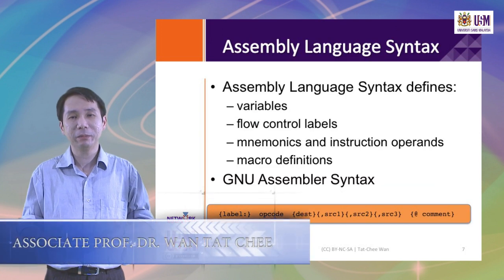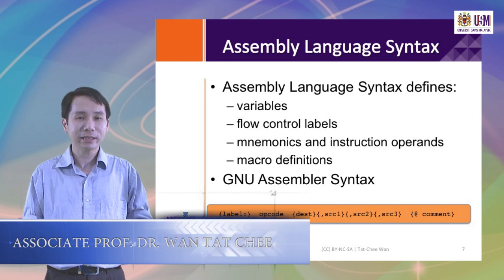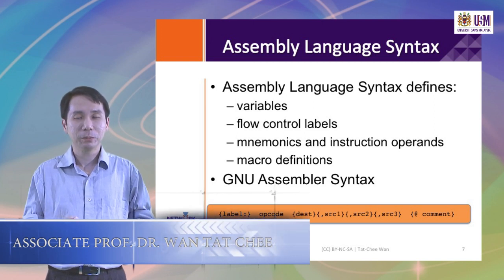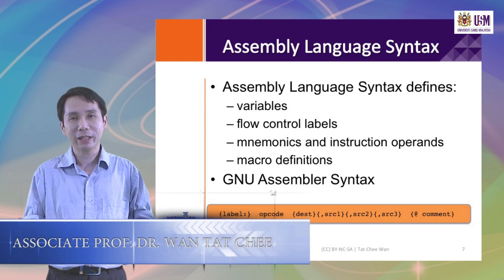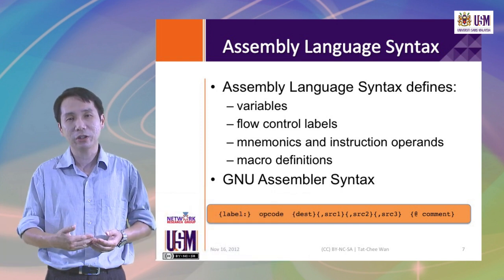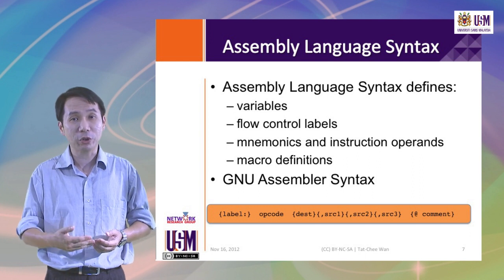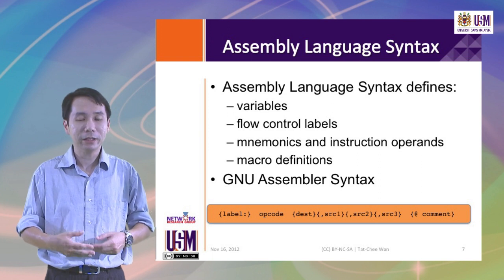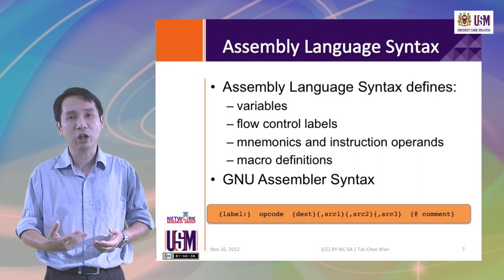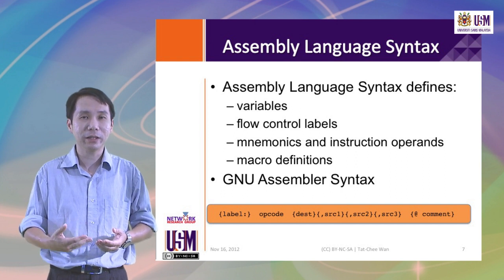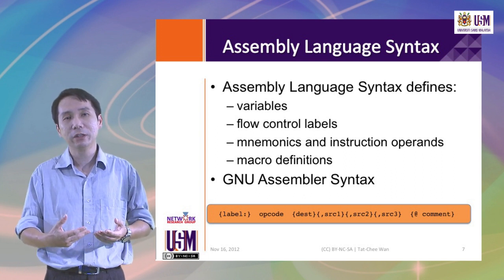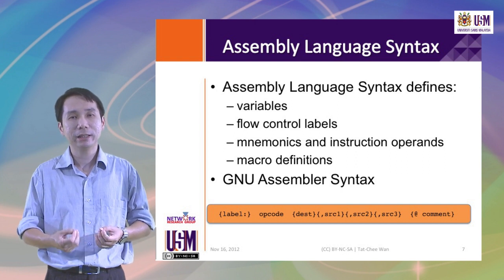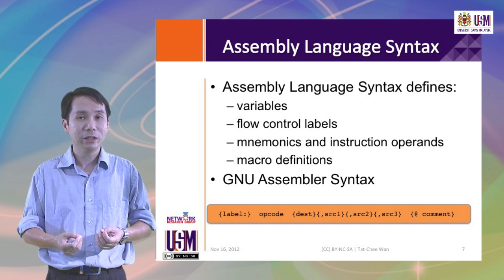In order to write assembly language programs, we need to know a little bit about the syntax. The syntax defines things like variables — locations in memory that hold values used as variables in our programs. Flow control labels define positions in the application that will be used as entry points into specific blocks of code. We will also need to know the specific mnemonics and instruction operands that define operations on the variables we have defined. In addition, we may have sequences of instructions used repeatedly, and these can be made into macros that are inserted into the source code whenever we invoke the macro.